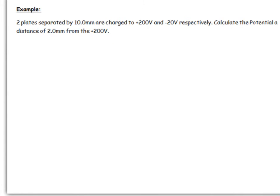You've got two plates separated by a distance of 10.0 millimeters, and they're charged to 200 volts and minus 20 volts, with a separation here of 10.0 millimeters. We want the potential a distance of 2 millimeters from the 200 volt plate.